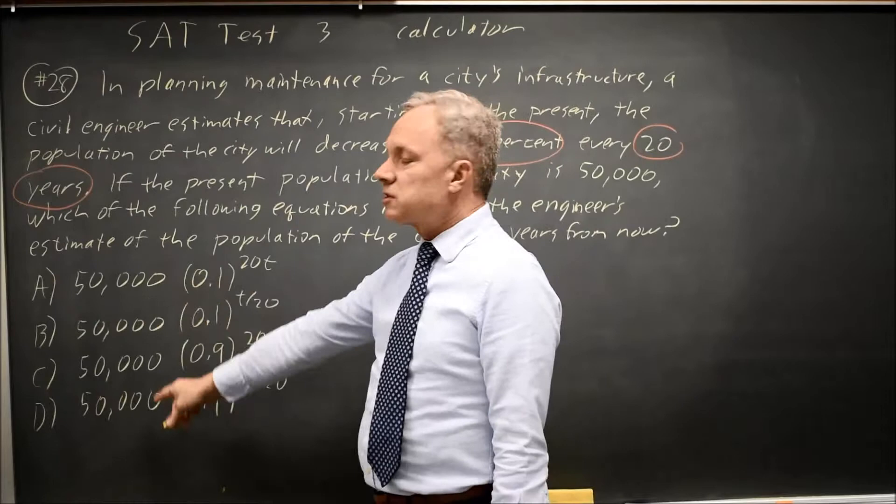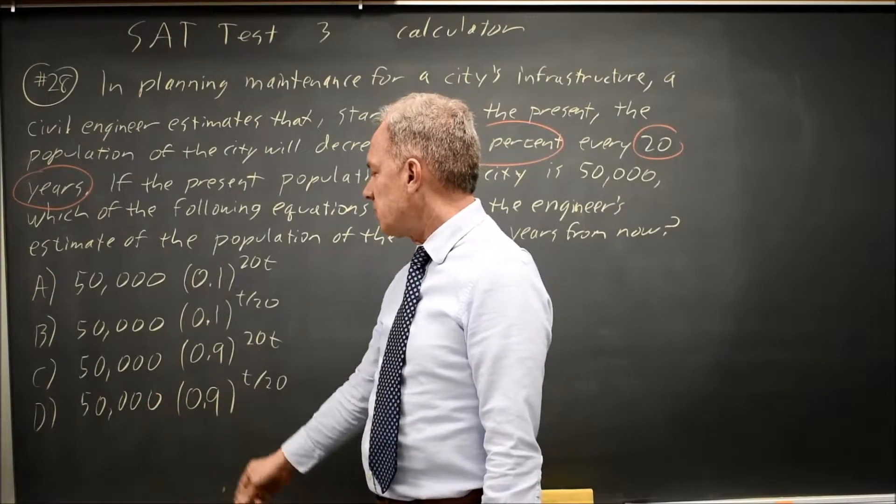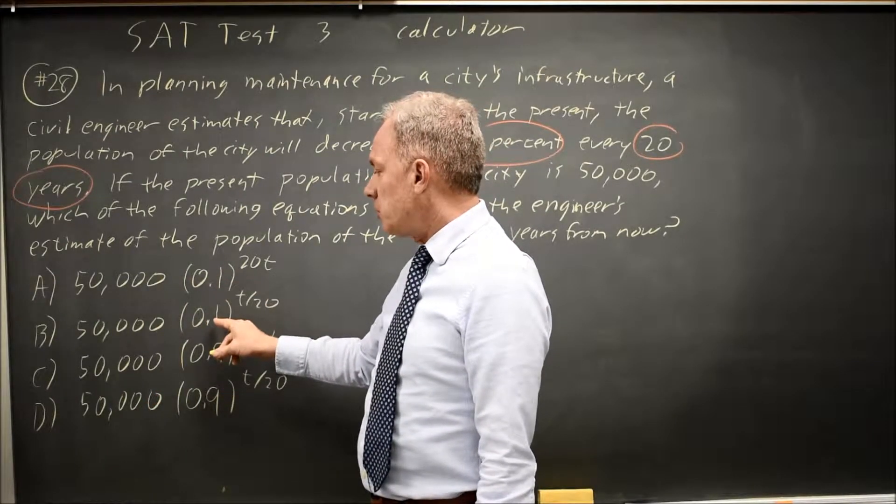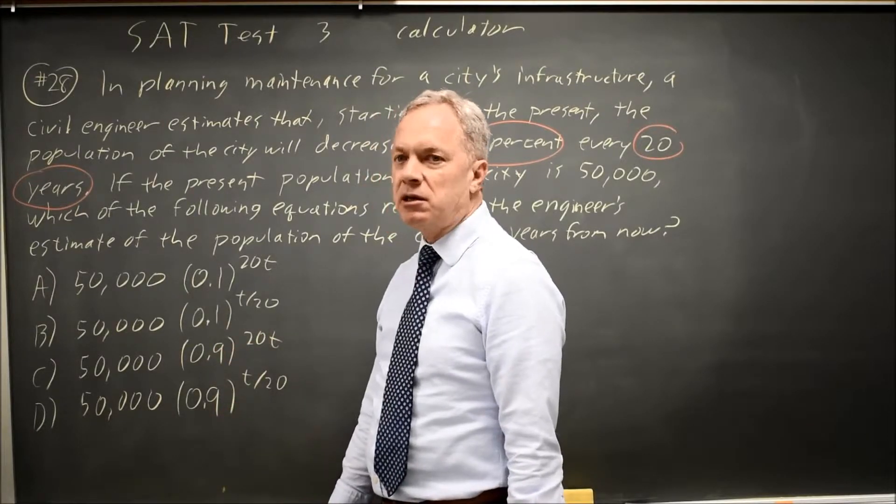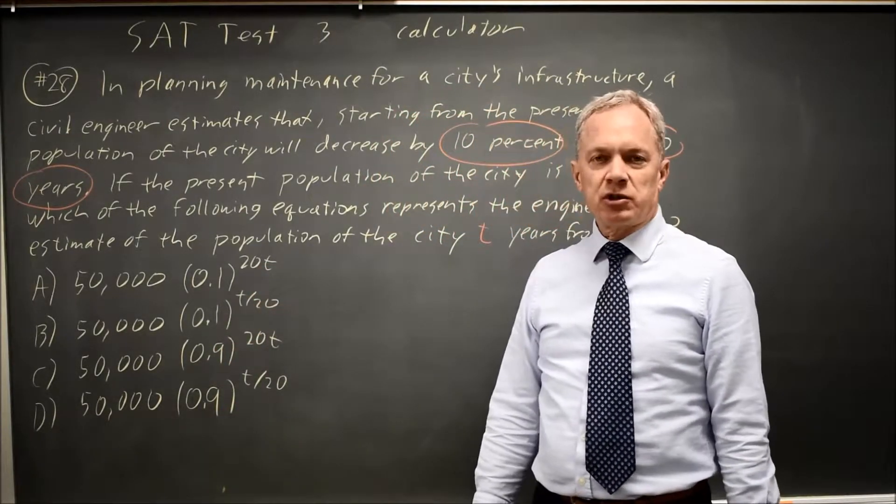Notice all our choices start with 50,000, so we don't have to worry about getting that number right. The question is, is it 0.1 to a power or 0.9 to a power? And then is that power 20t or t over 20?